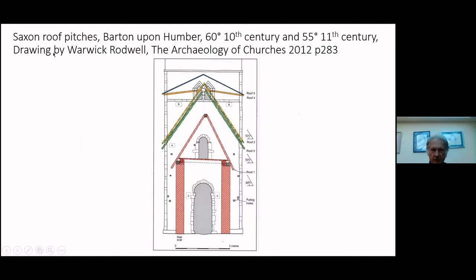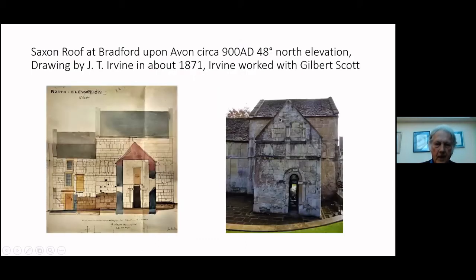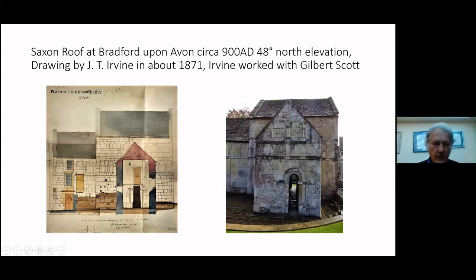Here we have Saxon roof pitches recorded by Rodwell at Barton on Humber: the first roof at 60 degrees, and when the church was extended and made bigger, one put in at 55 degrees. Here we have Bradford-on-Avon — this is 900 AD, the church chapel which you can go and see today. This is the north gable and this is the original stonework, and it's exactly at 48 degrees. This is the original survey carried out by Irving in 1871 when the church was being restored.